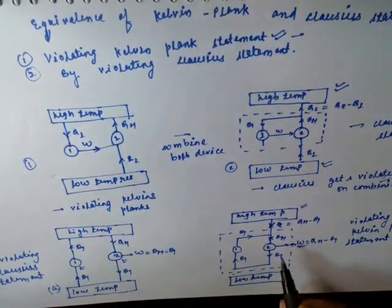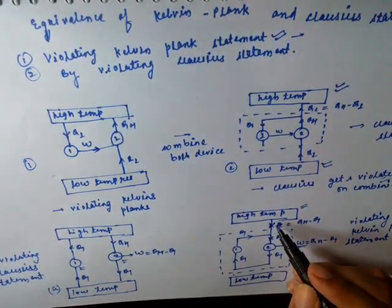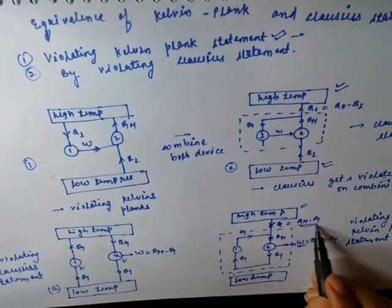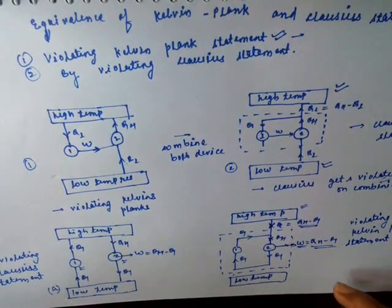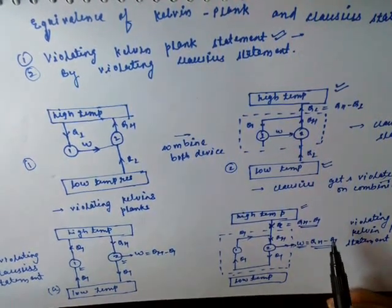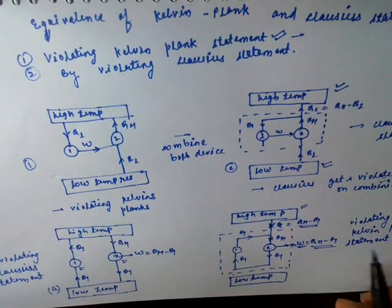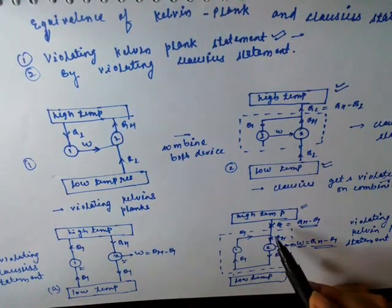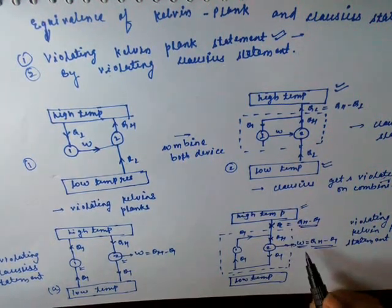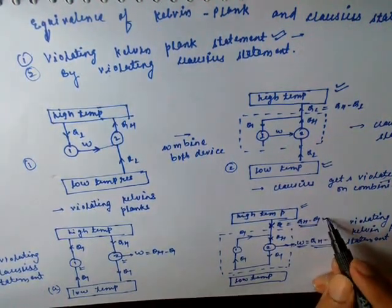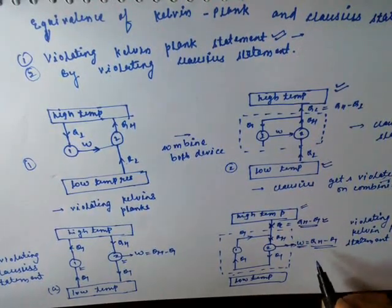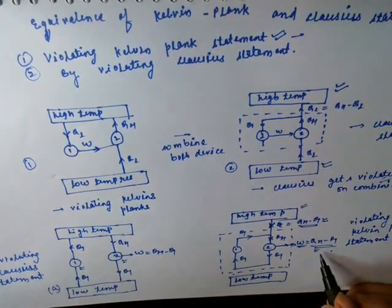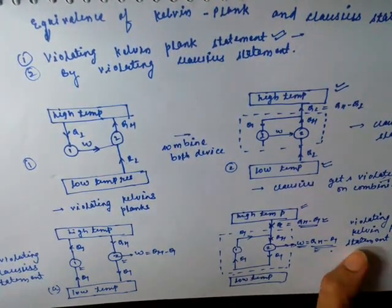This is of the type PMM2 — it is accepting heat from the high temperature body only in the form of Qh minus Q1 and delivering the total Qh minus Q1 to the surroundings. As we read earlier in the Kelvin-Planck statement, it is impossible for a device to convert all the heat it receives from a reservoir into work. Here it is receiving Qh minus Q1 amount of heat and delivering Qh minus Q1 amount of work to the surroundings, so this case is not possible — it violates the Kelvin-Planck statement.